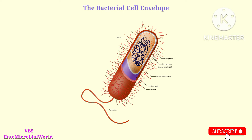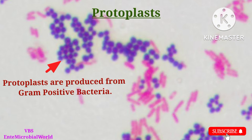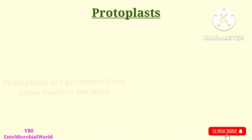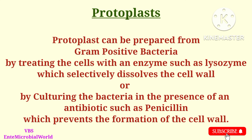Next we are going to see the definition of protoplast. Protoplasts are produced from gram positive bacteria. A protoplast is that portion of a bacterial cell consisting of the cytoplasmic membrane and the cell material bounded by it.